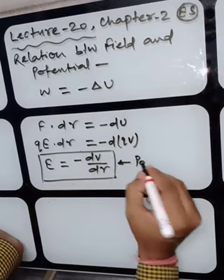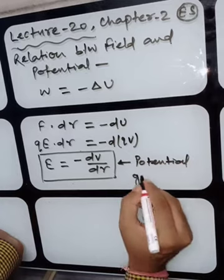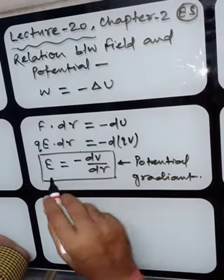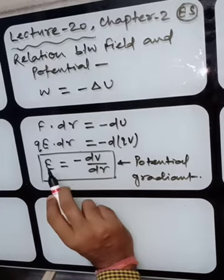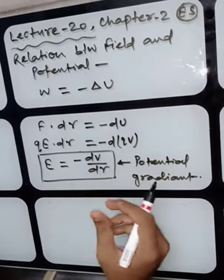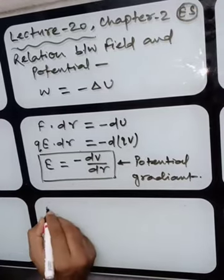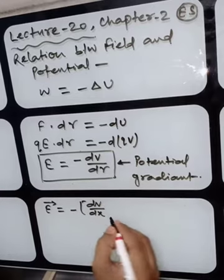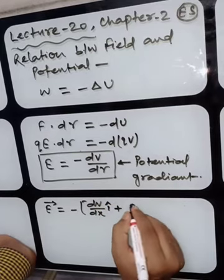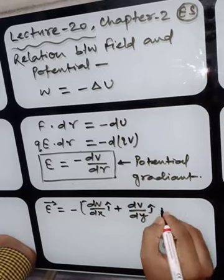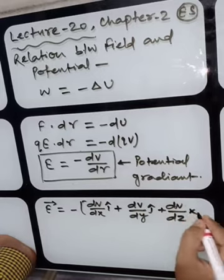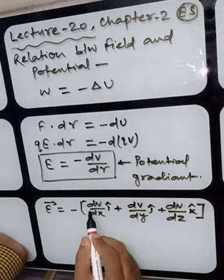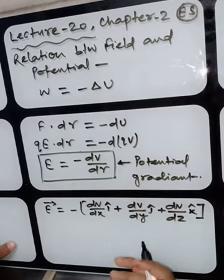This is a very simple relation between electric field and potential, also called the potential gradient. You have to remember this equation as E equals minus dV by dR. Since E is a vector quantity, just as you correlate force with energy, you can also write E in vector form as minus dV/dx i-cap plus dV/dy j-cap plus dV/dz k-cap. While talking about very small quantities, you have to take the partial differentiation.